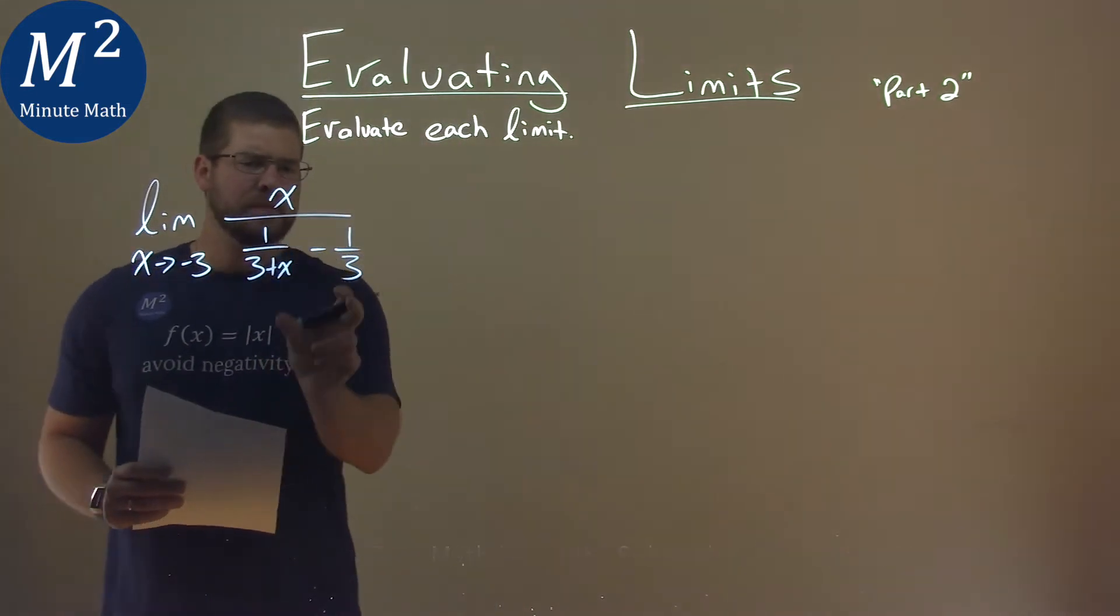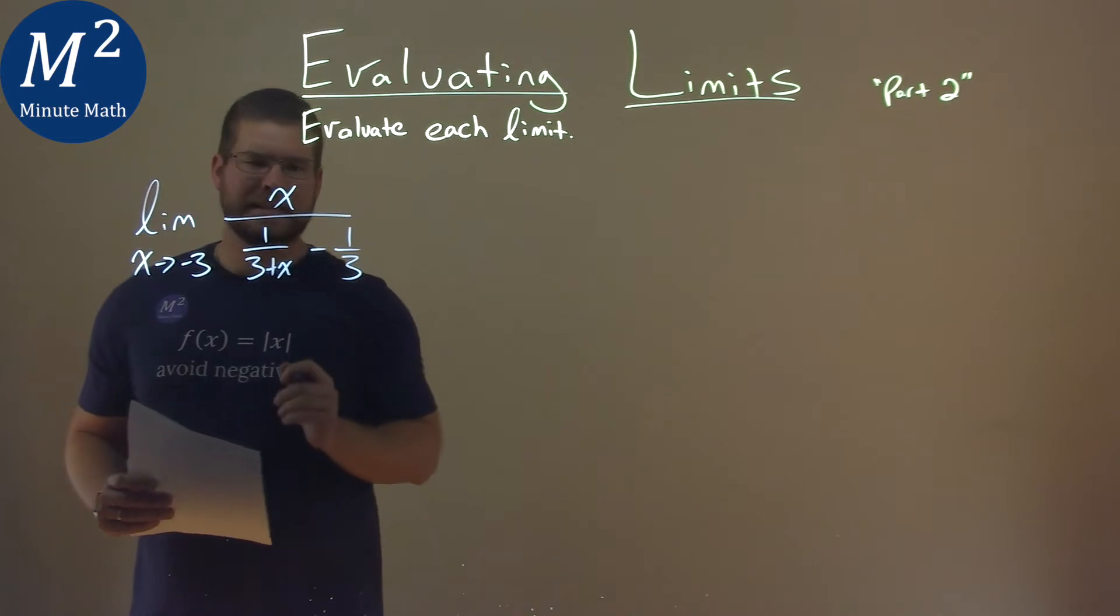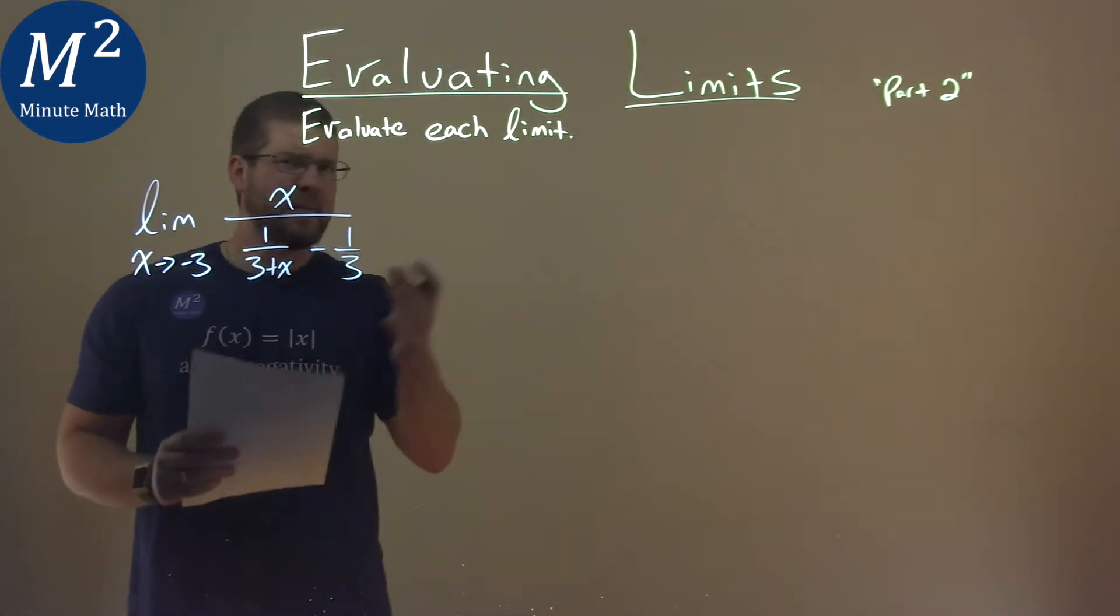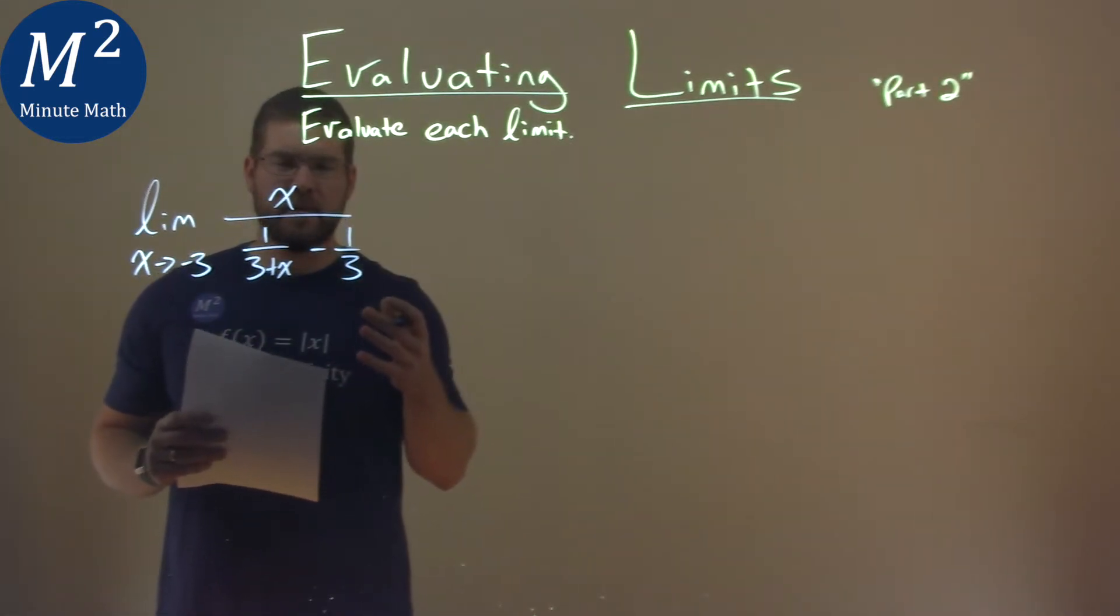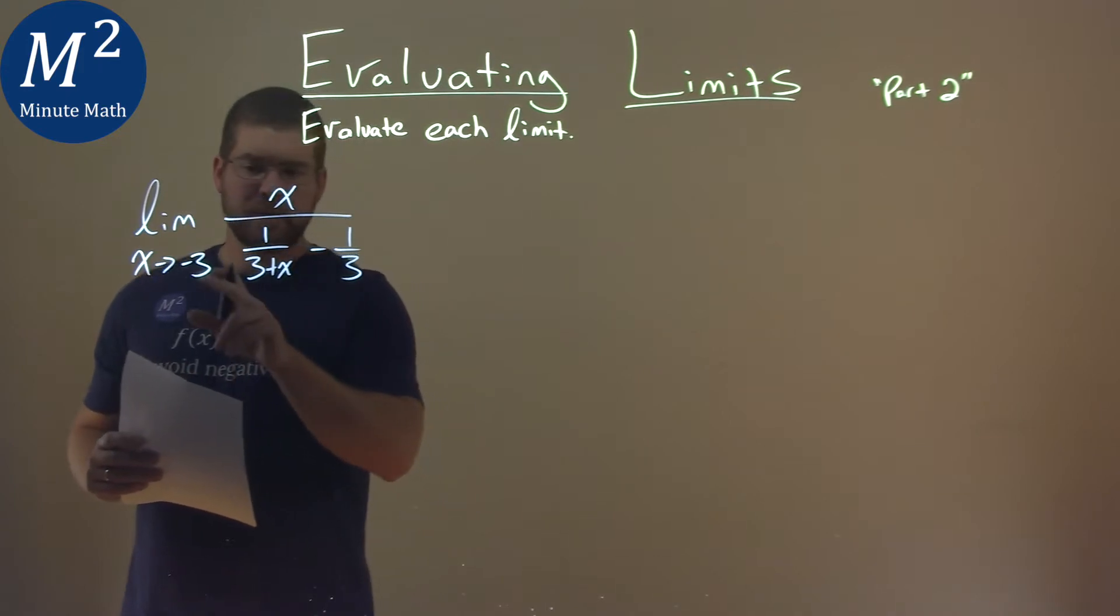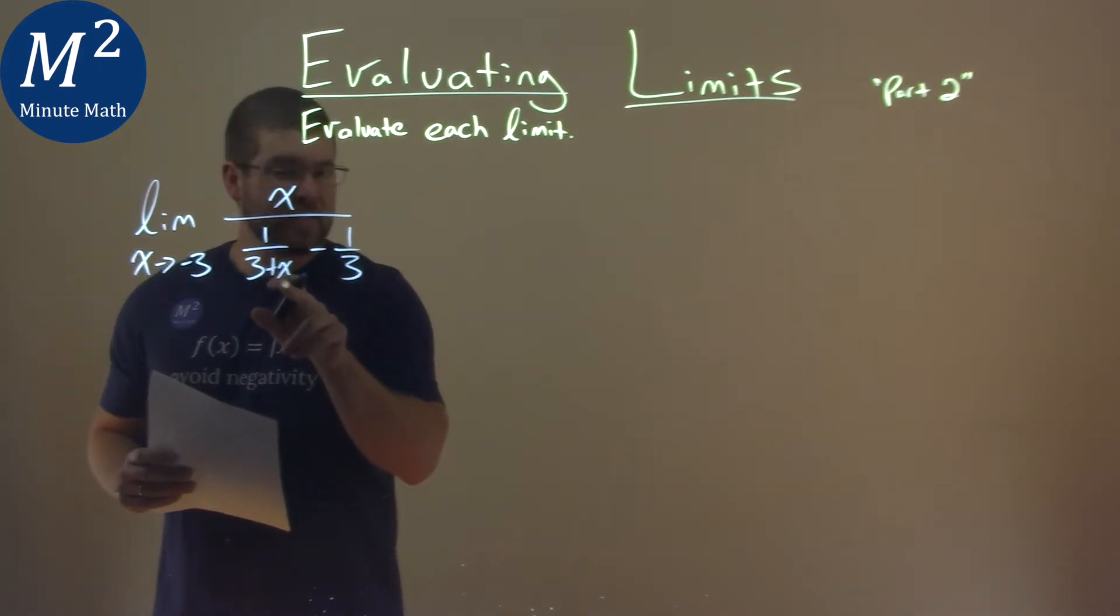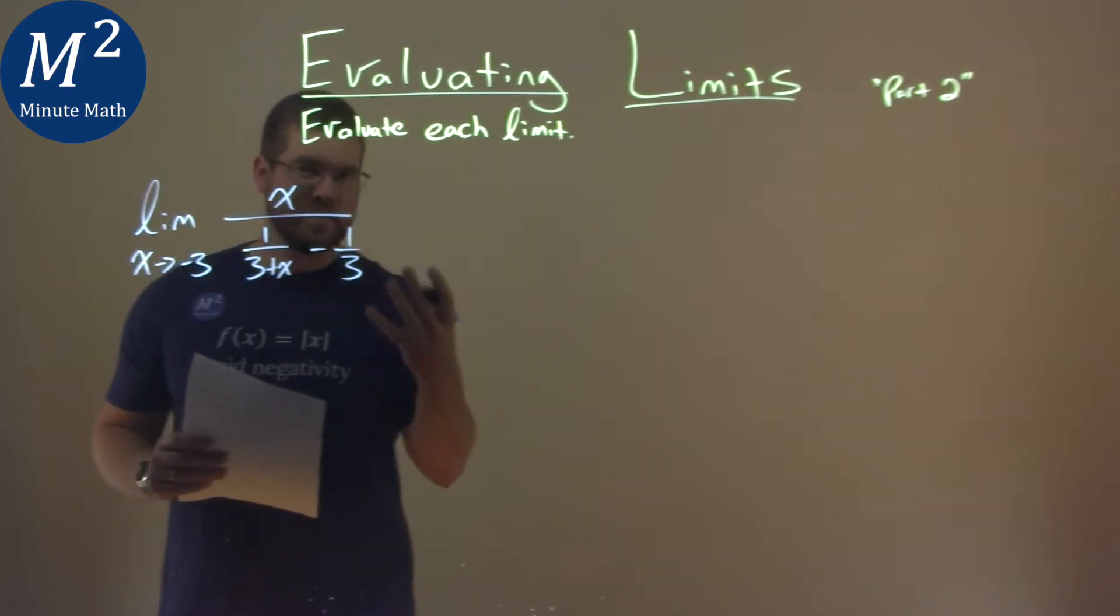Now the first thing I'm going to try to do is see if we can combine this fraction down here. We really have to simplify this to try to cancel something out, because right now we have an issue. Negative 3 goes right in for that x, and we're dividing by 0, and so we can't do that.